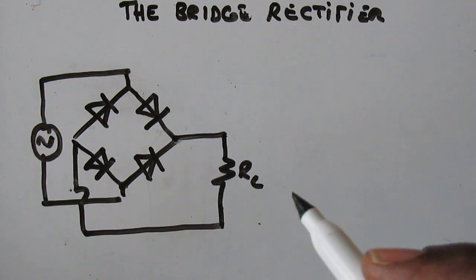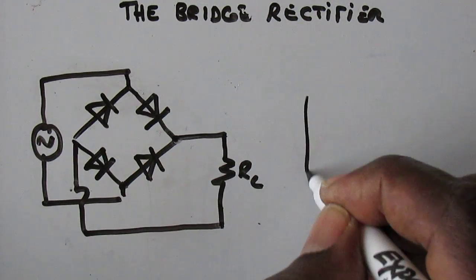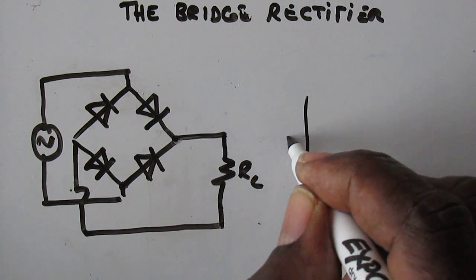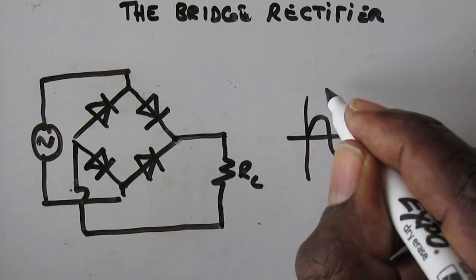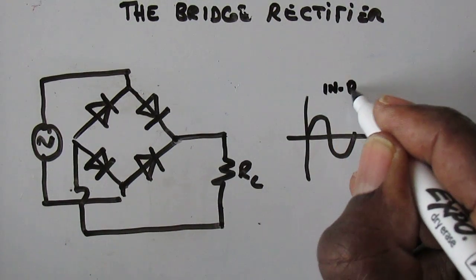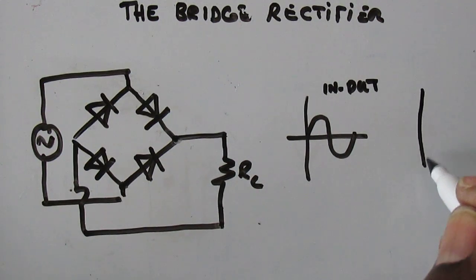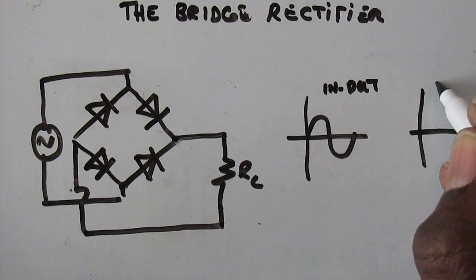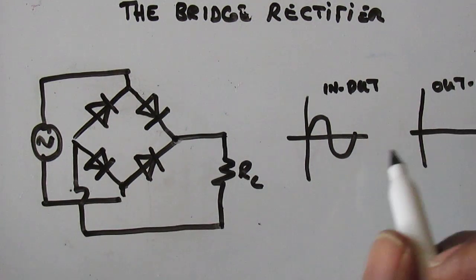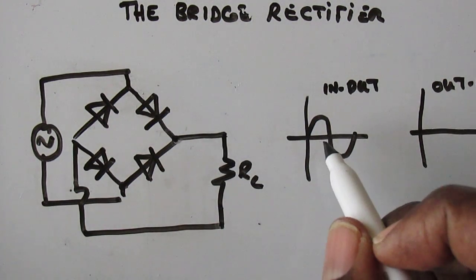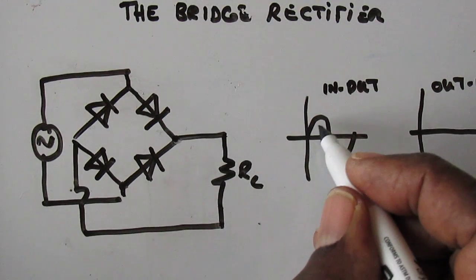We're going to consider the input waveform — a sinusoidal waveform. That's the input, and we're also going to look at the output to see how the output looks in relation to the input. Now let's consider the first half cycle.